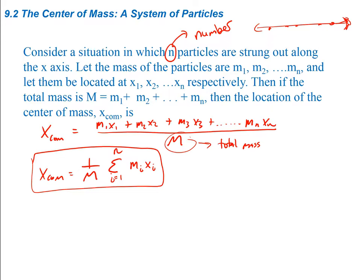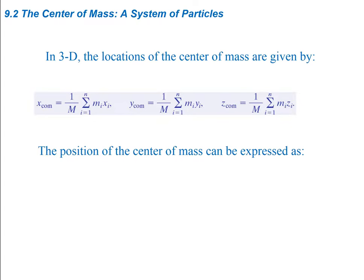But if you have particles all over the place throughout three axes, we have to deal with that as well. In 3D, the locations of the center of mass are given by the same equation, but instead of multiplying by the x component, we multiply by the y component for the y center of mass, and the z component for the z center of mass. So we split up our position vector into x, y, and z components and find the center of mass for each.